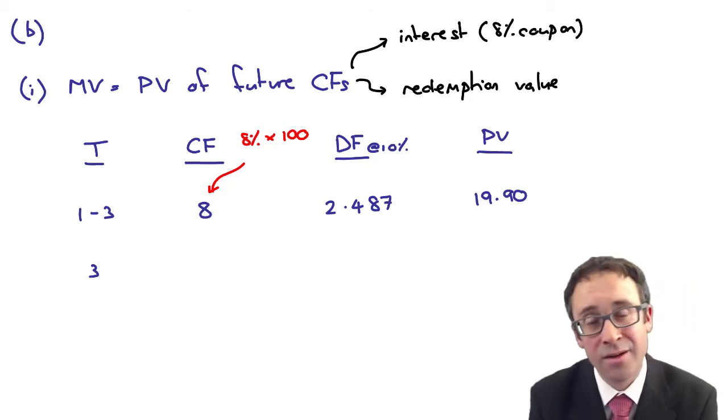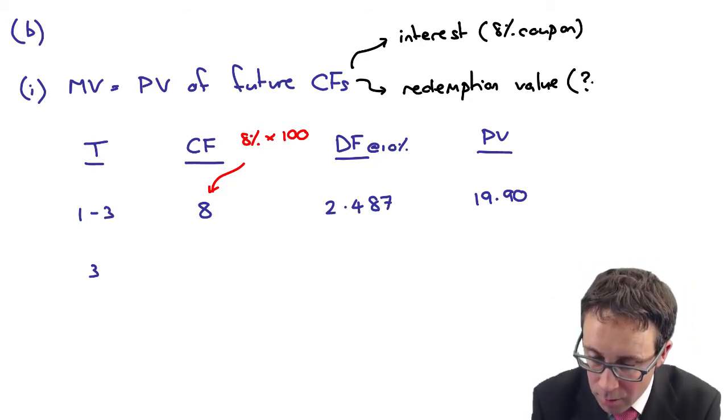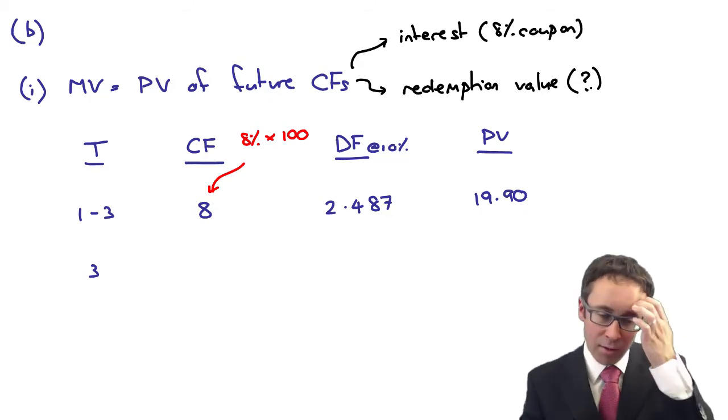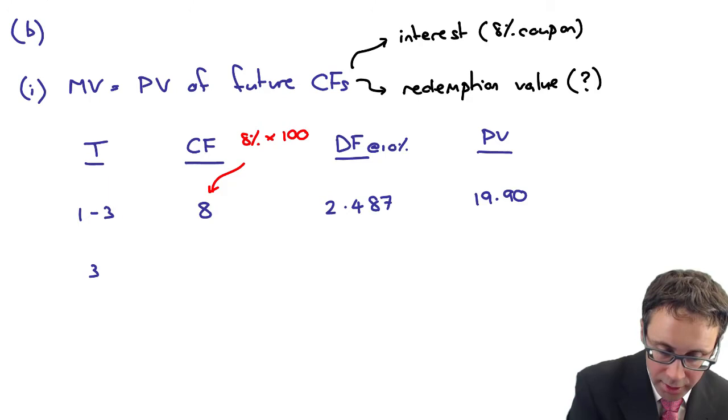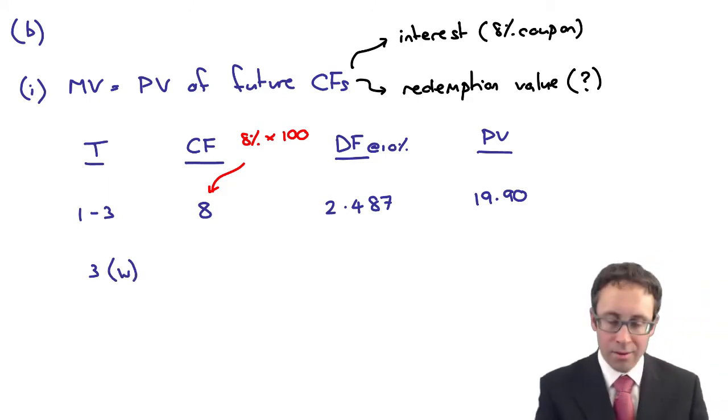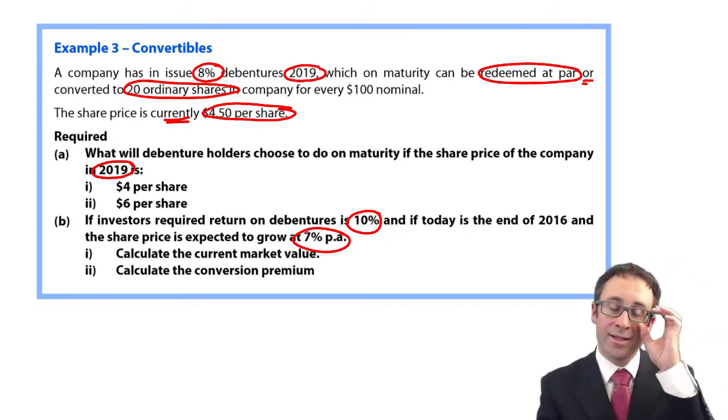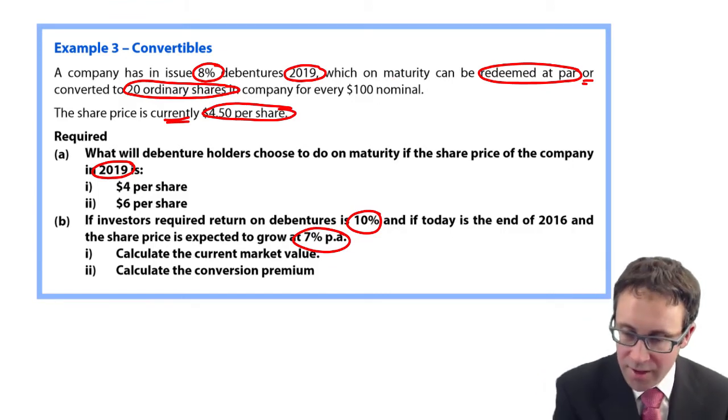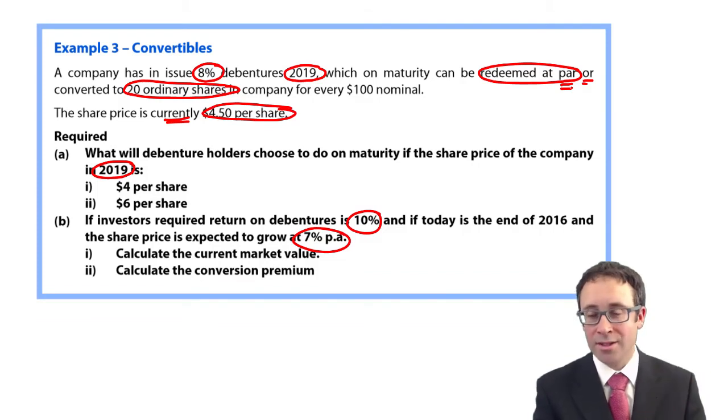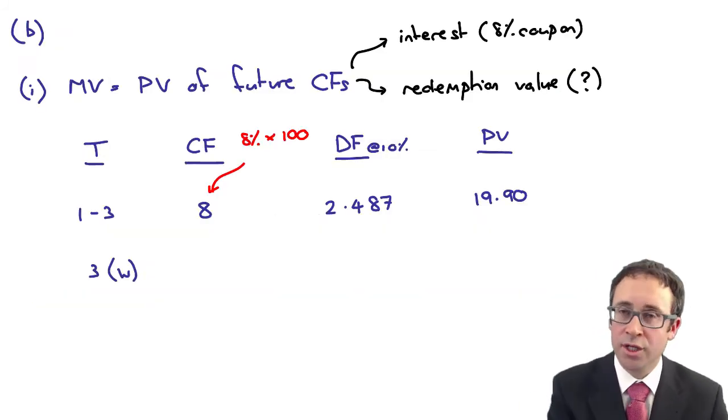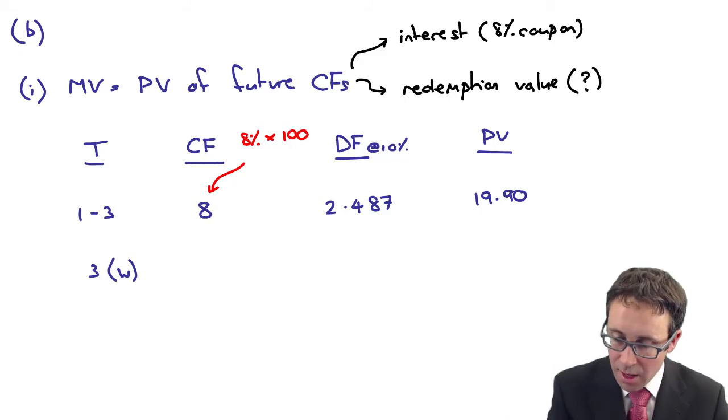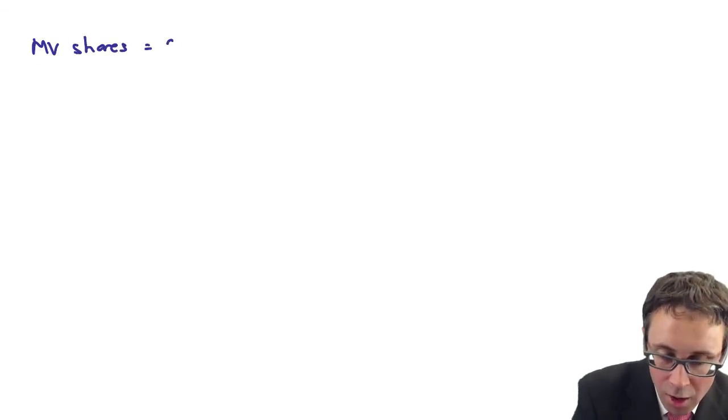However, the issue that we have there is it's a convertible. So we don't know what the redemption value is. It depends upon what the value of the shares are. So what we need to do, you just need to do a little working to see whether or not, based upon this growth rate in the share price of 7%, will that get to be above the redemption value at par? Will it become greater than $100? Because if it is, you go with the shares. If it isn't, you go with the cash, wouldn't we?